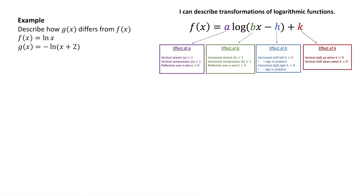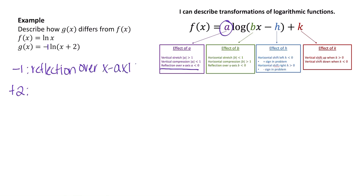Now let's describe how f of x equals ln of x compares to g of x equals negative ln of x plus 2. We have a negative in front, which is like a negative 1, so that is a value of a. When a is less than zero, we have a reflection over the x-axis. We don't have a stretch or compression, because for that the absolute value of a must be less than 1 or bigger than 1 — if it equals 1, there's no change. So we just have a reflection over the x-axis. Then the plus 2 is the value of h, and since we have a plus sign, that shifts the graph to the left two units.